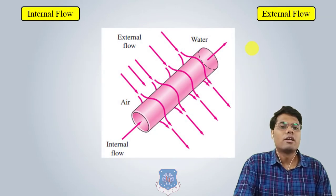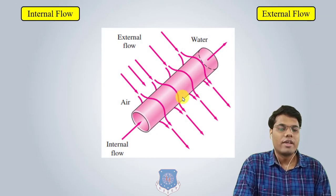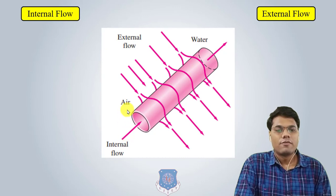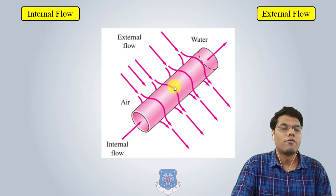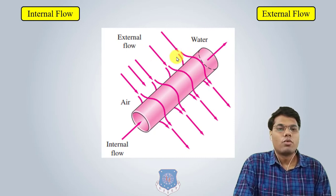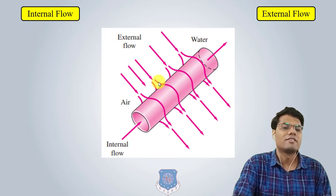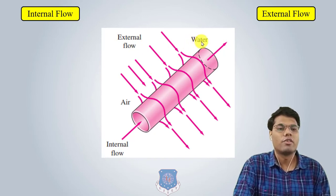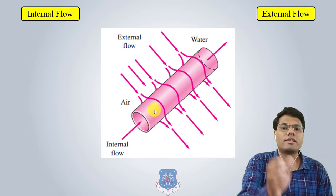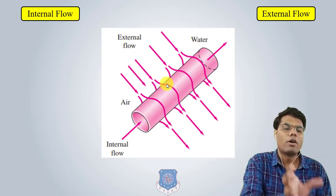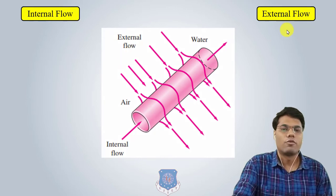Second is internal flow and external flow. If the flow of fluid is on the internal side of a pipe, it is internal flow. If the flow is over the external surface of the pipe, it is external flow. For example, water flowing inside a pipe is internal flow, while air flowing over the outside surface of the pipe is external flow.